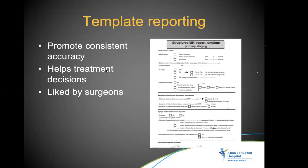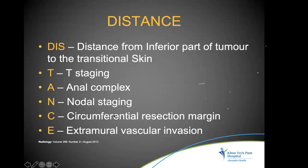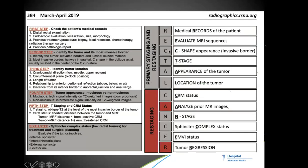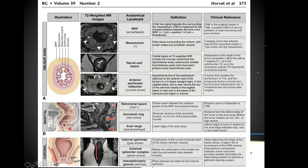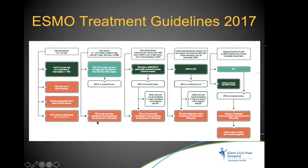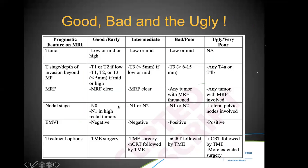Template reporting is important as it promotes consistent reporting, increases accuracy, helps treatment decisions, and surgeons and clinicians appreciate it for being easy to read. A well-known mnemonic called DISTANCE outlines what to look for in rectal cancer MRI. There are various treatment guidelines, with slight differences between Europeans and Americans — Europeans tend to divide tumors more granularly with intermediate-risk categories, some of whom may get short-course radiotherapy, while Americans mostly use the full course of neoadjuvant chemotherapy.